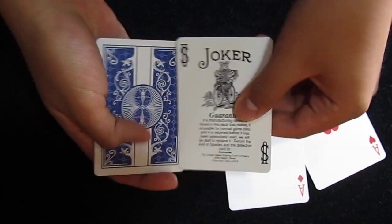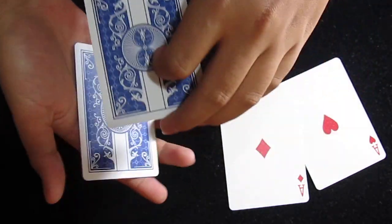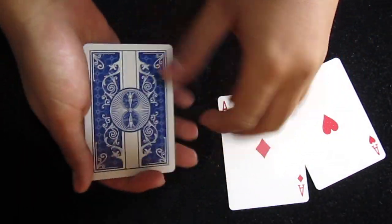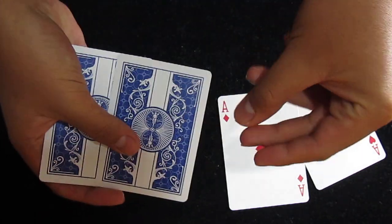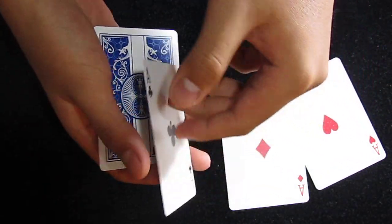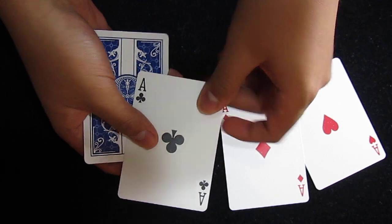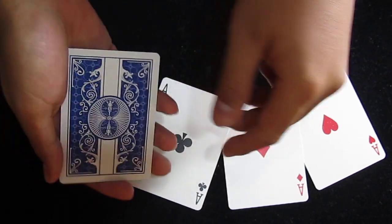Okay, so here's the Guaranteed Joker, and the other one. So, just watch this Joker, and watch as it changes with a snap and a flick into the Ace of Clubs. Okay, it's the right color, but I still need the Ace of Spades.